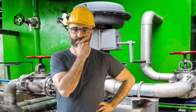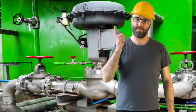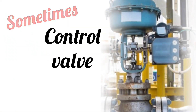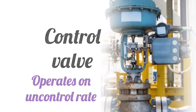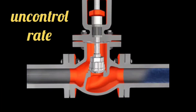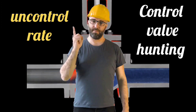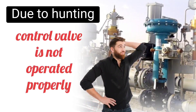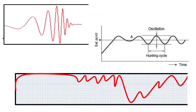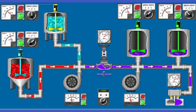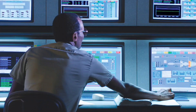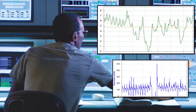Today we are going to discuss a common problem in the control valve. Sometimes the control valve opens and closes at an uncontrolled rate. When the control valve opens and closes at an uncontrolled rate, it is called control valve hunting. From control valve hunting, the control valve does not operate properly and the process variable changes randomly. This can cause process disturbance. If you see the trends on SCADA, you will see this type of trend.